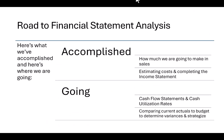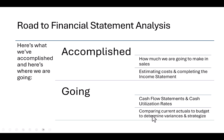As a reminder, here's what we've accomplished and where we're going. We've moved estimated costs and completing the income statement up to the accomplished block. Next we're going to look at cash flow statements and cash utilization rates in order to get to our end goal, which is variances in strategy.